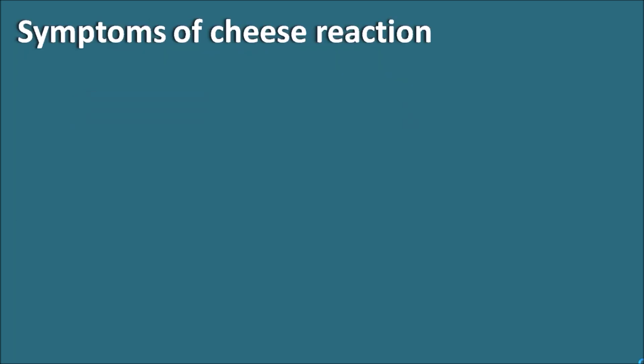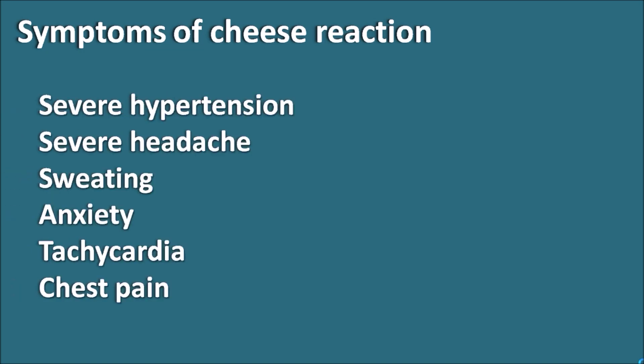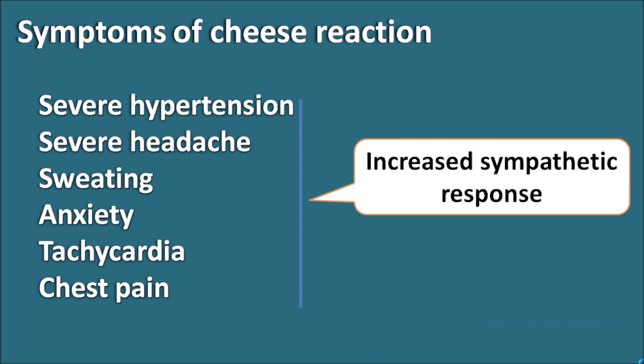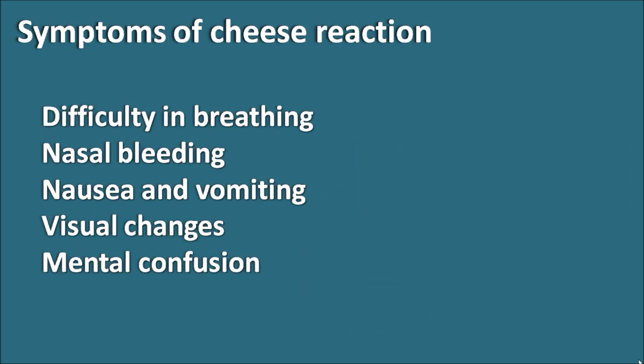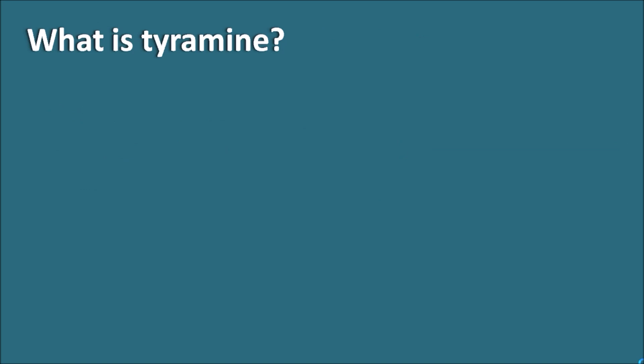The symptoms of cheese reaction include severe hypertension, severe headache, sweating, anxiety, tachycardia, and chest pain. All these symptoms resemble sympathetic activation, mainly resulting from the excessive sympathetic response caused by tyramine. Other symptoms include difficulty in breathing, nasal congestion, nausea and vomiting, visual changes, and mental confusion.